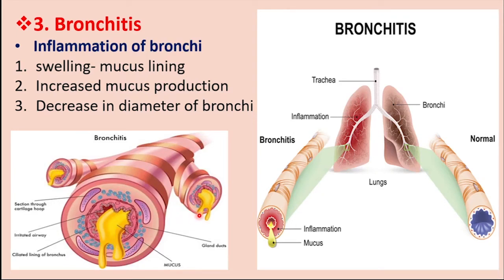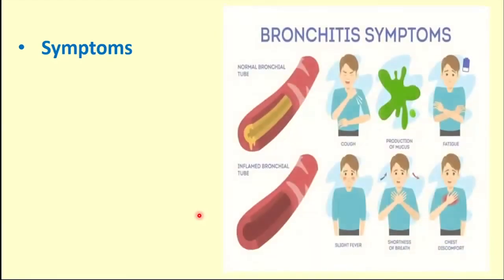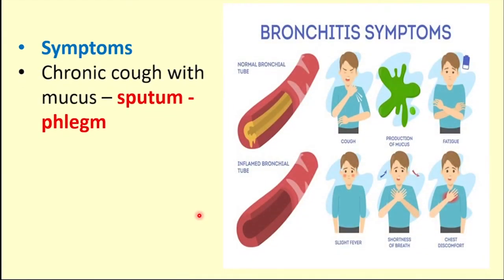Mucus production from the bronchi increases. The main symptoms of bronchitis are chronic cough with thick mucus, known as sputum or phlegm. The mucus is sent out at the time of coughing. Other regular symptoms include fatigue, light fever, shortness of breath, and chest discomfort. The special distinguishing symptom is chronic cough with thick mucus — sputum or phlegm.